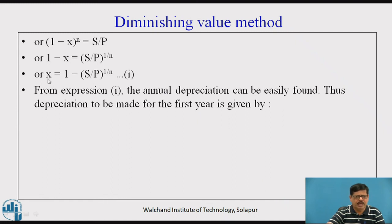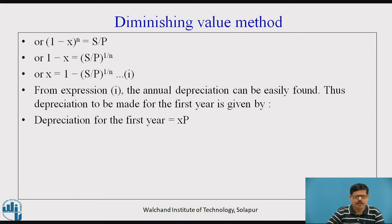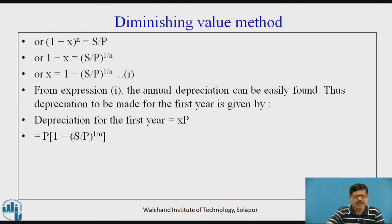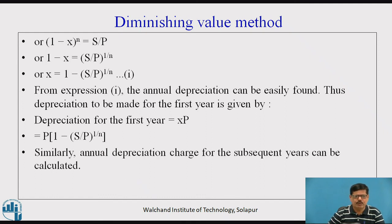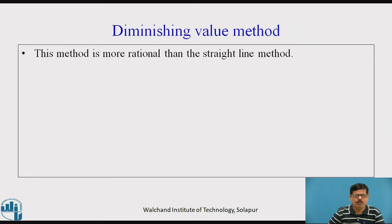Once we get the annual unit depreciation charge using this equation, we can calculate the reduced value of the equipment. The depreciation for the first year will be x·P, and substituting the value of x as 1 − (S/P)^(1/n), we can easily calculate the depreciation charge for each subsequent year and the total fund to be collected. This is known as the diminishing value method.